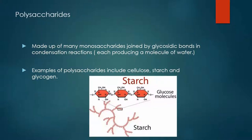Polysaccharides are made of many repeating units of monosaccharides. Examples of polysaccharides include cellulose, starch, and glycogen, and we'll go into detail about each of these and their properties in the next couple of slides.